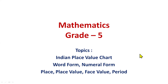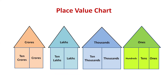Hello everyone, today I'm going to talk about something really important in math — the Indian place value chart, word form, numeral form. We'll explore numbers up to 10 crore. What is a place value chart? A place value chart is used to read and write numbers. Imagine there are four houses: ones house, thousands house, lakhs house, and crores house. In the ones house, three members can live: ones, tens, and hundreds. In the thousands house, two members can live: thousands and ten thousands. In the lakhs house: lakhs and ten lakhs. In the crores house: crores and ten crores.